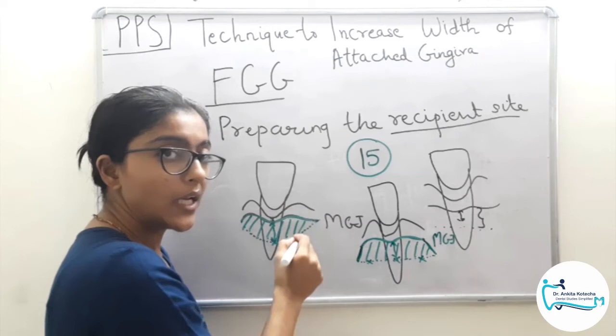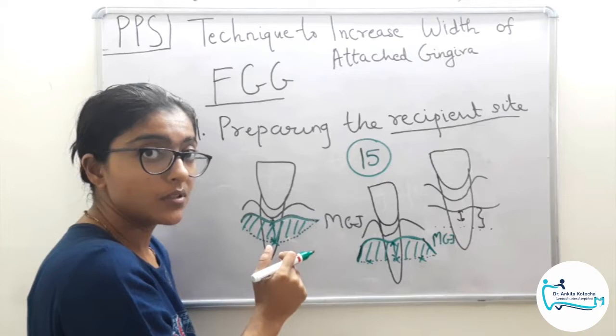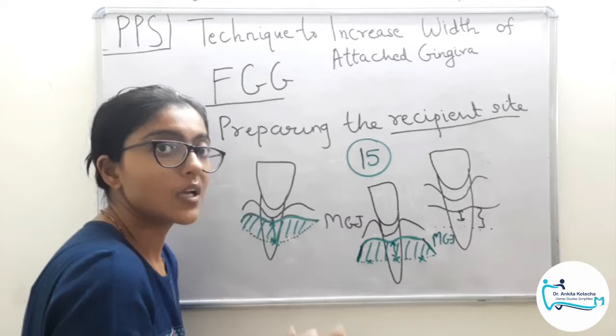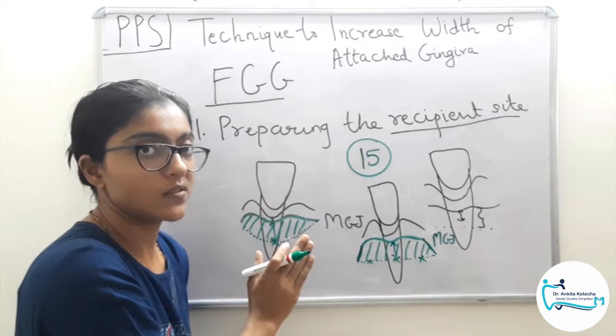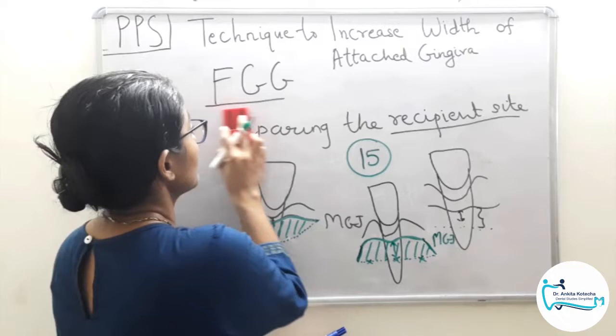This is how the recipient site is prepared: local anesthesia, followed by incisions of the appropriate depth, and freeing the muscle attachments. Once the site is prepared, cover it with a sterile wet gauze. Now comes the next step — procuring the donor tissue.